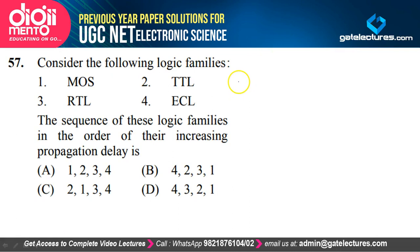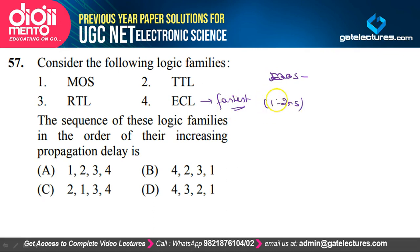Question 57: Logic families in increasing order of propagation delay — ECL is the fastest at 1–2 nanoseconds, then TTL, then RTL, then MOS (which takes the maximum time). So the increasing order of propagation delay is: ECL (4), TTL, RTL, MOS (1) — option B is correct.